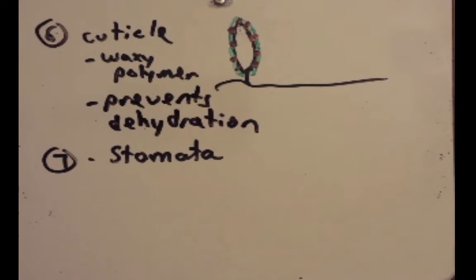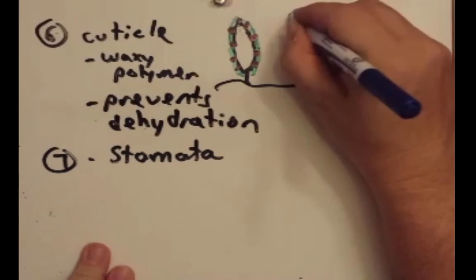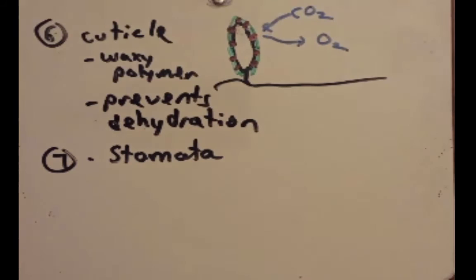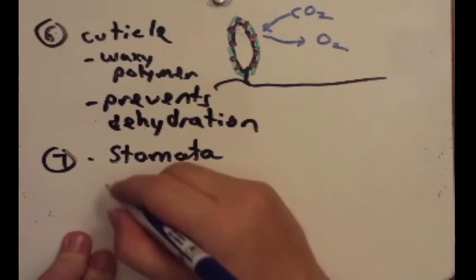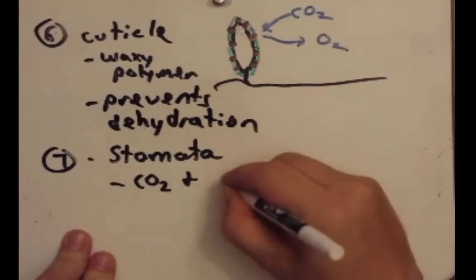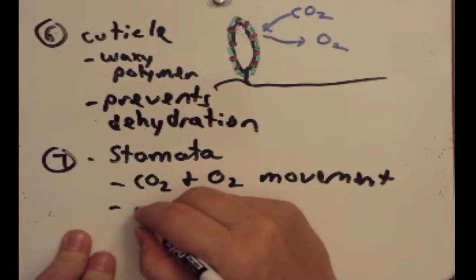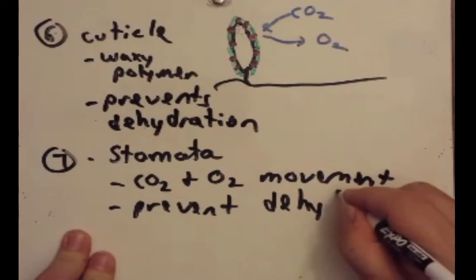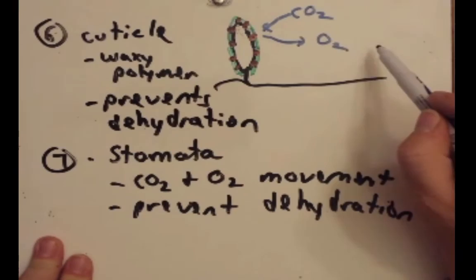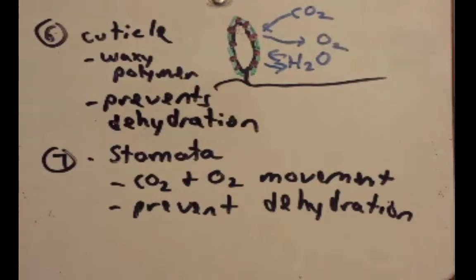These stomata allow for the movement of CO2 into the plant and then oxygen out of the plant. They will also help prevent dehydration as well. So let's list them down here, CO2 and O2 movement, and prevents dehydration as well. Because in addition to CO2 moving in and oxygen moving out, water can also move in and out through the stomata. So in very dry environments, the stomata will constrict and allow for less movement of water out of the plant.